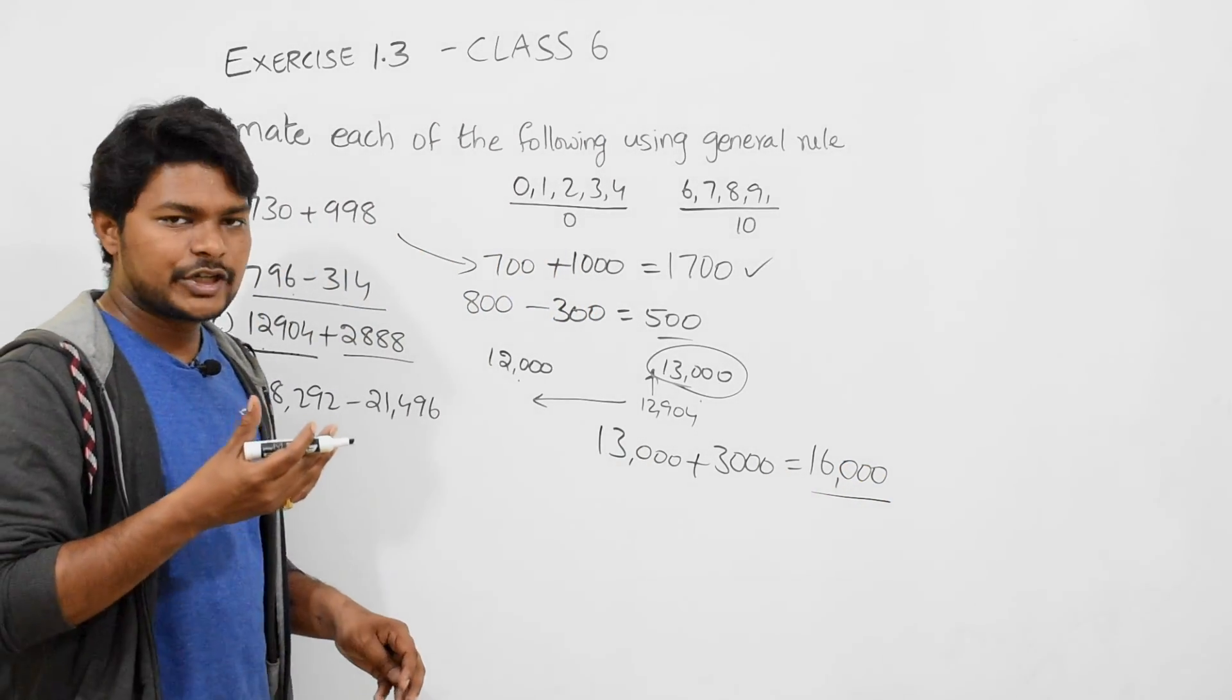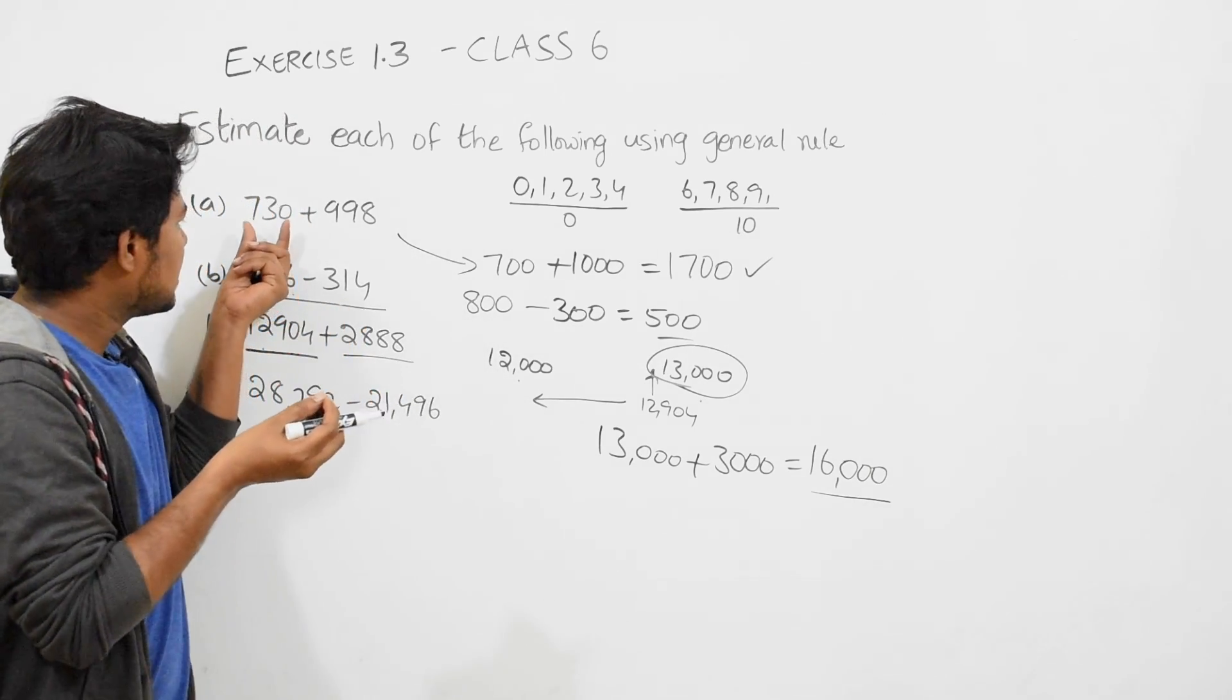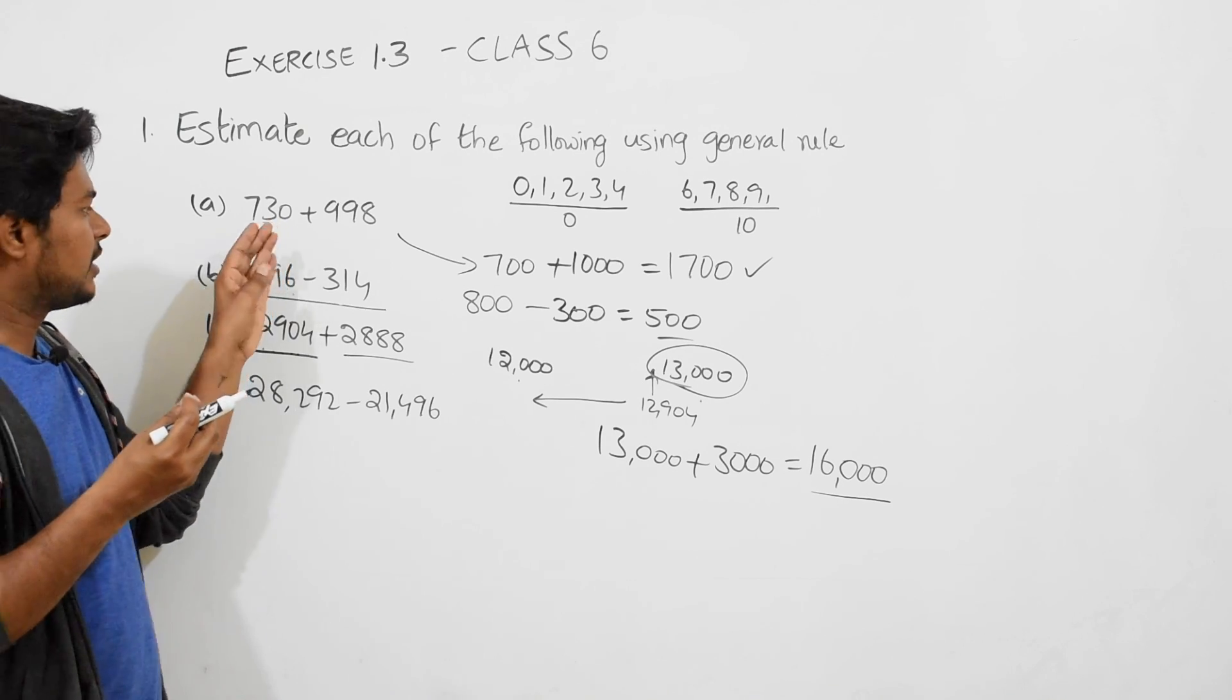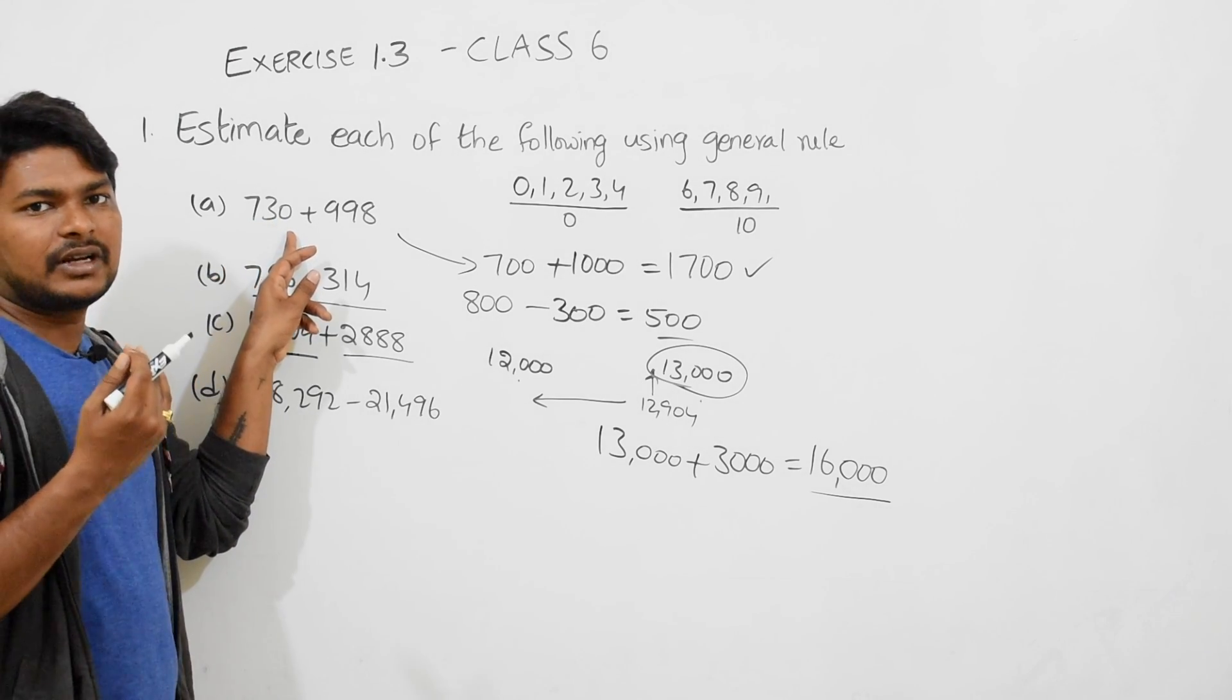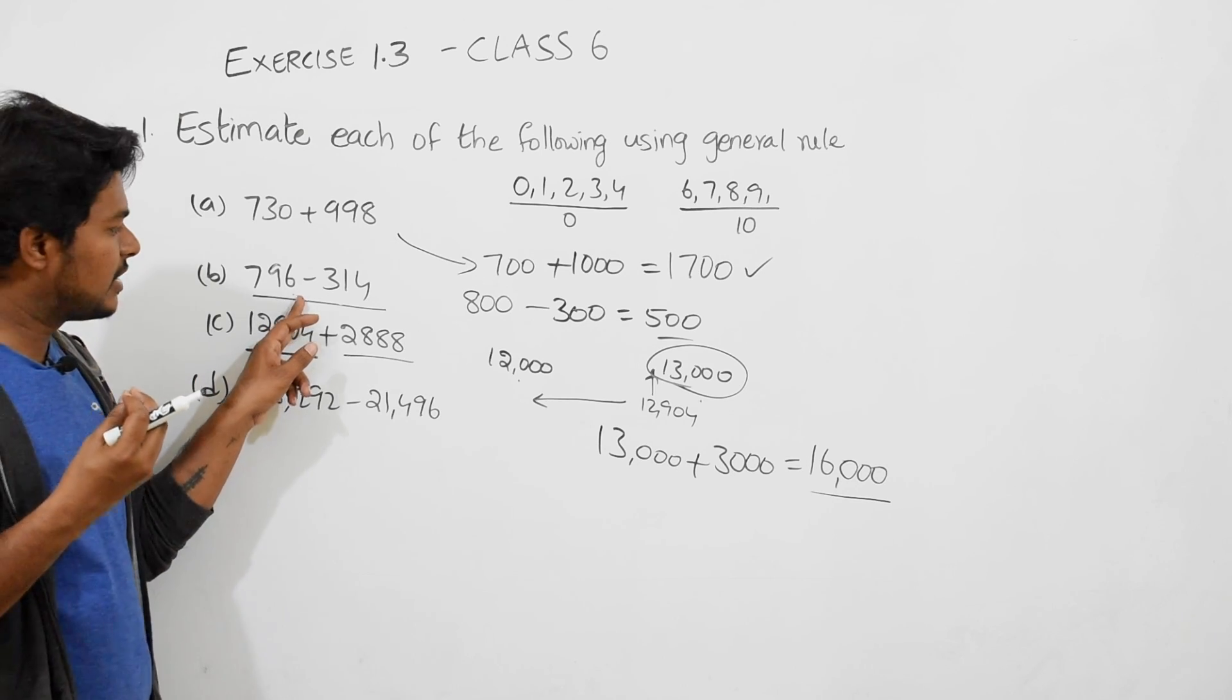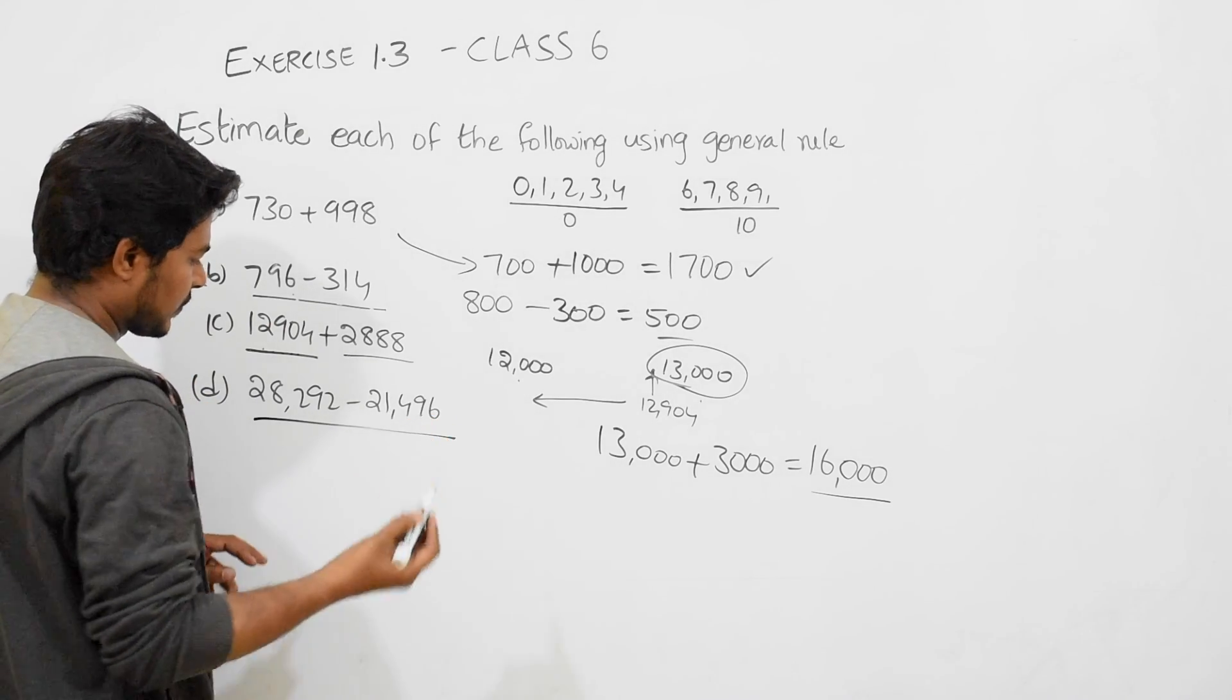Now you're getting how to do estimation. You take the units value, the tens value, the hundreds value. If it is in hundreds, choose the nearest hundred. 730, nearest hundred is 700. 998, nearest is 1000. Likewise, 796, nearest hundred is 800. 314, nearest hundred is 300.